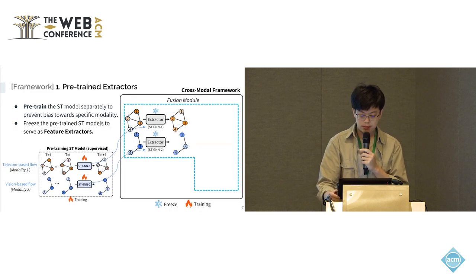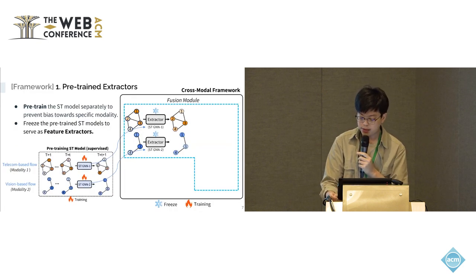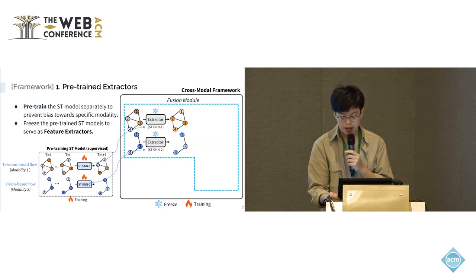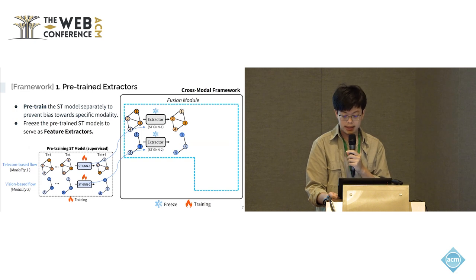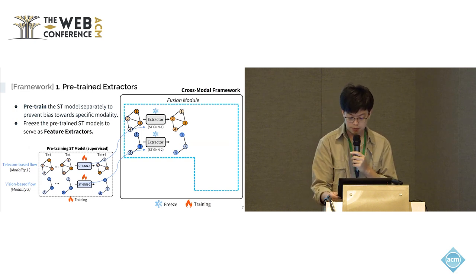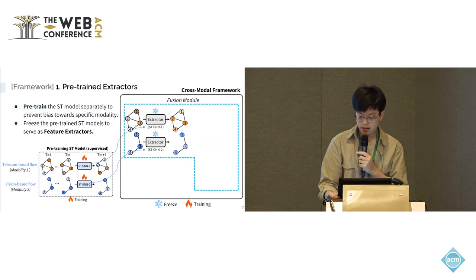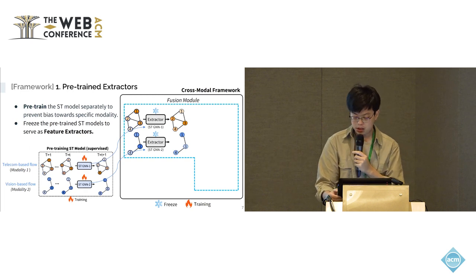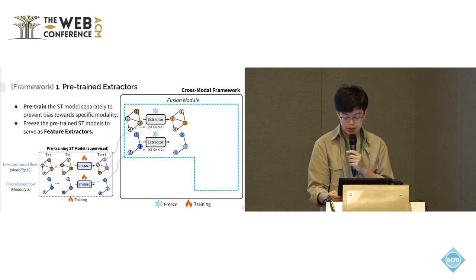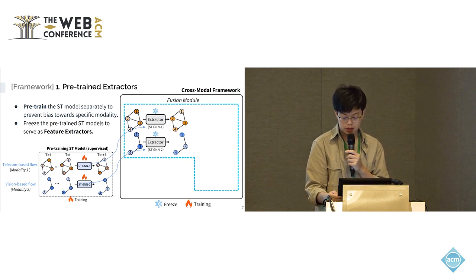We propose a framework to address this complex problem. We begin by pre-training a spatial-temporal model for each modality's data separately, rather than training them together, to prevent bias toward a specific modality. These pre-trained models are then frozen and used as feature extractors in our framework, allowing us to extract spatial-temporal features from each modality.